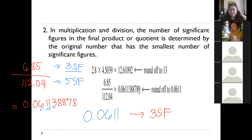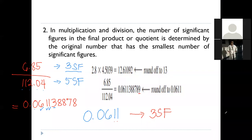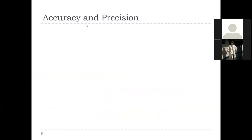Do not forget: for addition or subtraction, the final answer should have the least number of decimal places; for multiplication or division, it should have the least number of significant figures. Let's try one more example. 8.710 times 0.93 — using a calculator gives 8.1003. This is multiplication, so the final answer should follow the lesser number of significant figures.